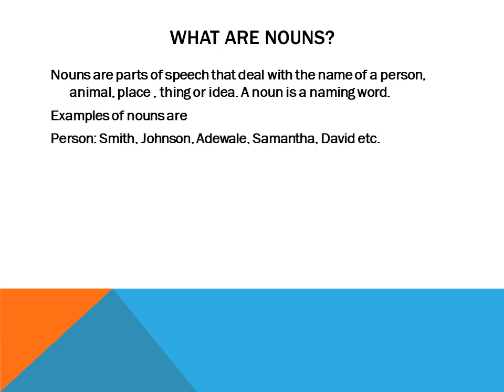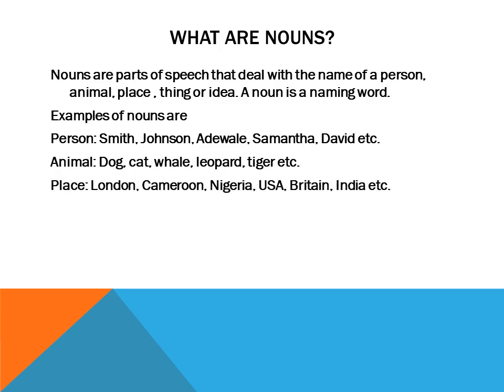Let us take a look at examples of nouns. Under the category of person, we have Smith, John, Adewale, Samantha, and David. For animals, we have dog, cat, leopard, and tiger. For places, we have London, Cameroon, Nigeria, USA, Britain, and India.